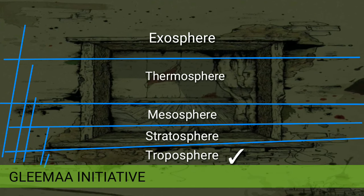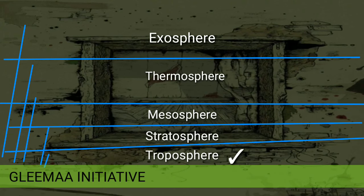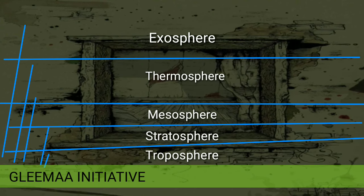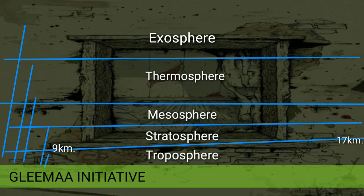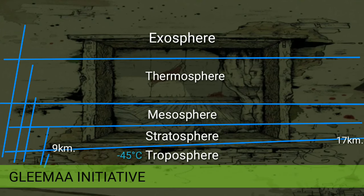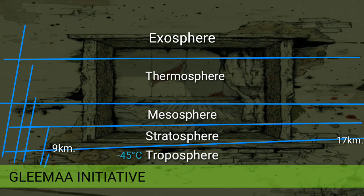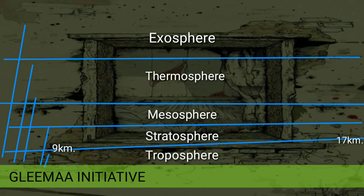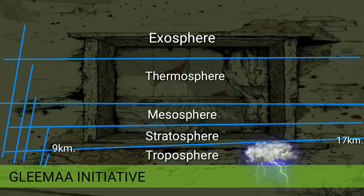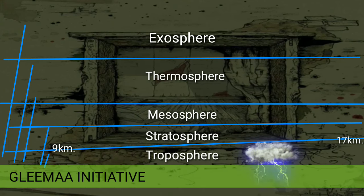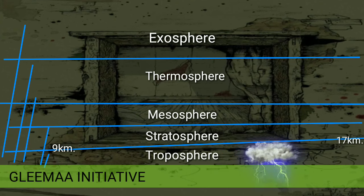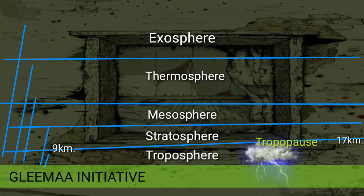Coming to the lowermost layer of atmosphere, that is troposphere, which literally means the zone of mixing. It extends to an average height of 12 kilometers from Earth's surface, although its altitude varies from about 9 kilometers at the geographic poles to 17 kilometers at the equator. In this layer, temperature decreases up to minus 45 degrees Celsius with increasing height, which is termed as normal lapse rate. Various weather phenomena can also be found here such as cumulonimbus clouds, precipitation, lightning, thunderstorm, etc. In this layer, aviation activity also takes place including commercial jets and parachutes. The troposphere is bounded by tropopause, wherein in most places inversion of temperature is noticed.